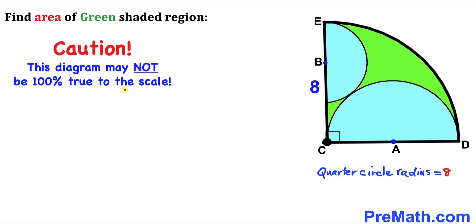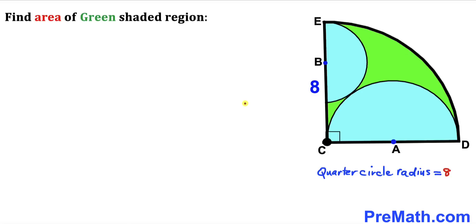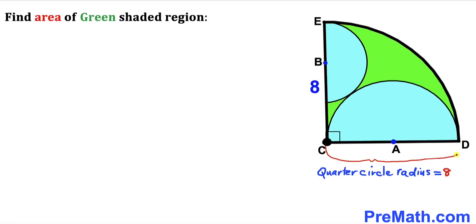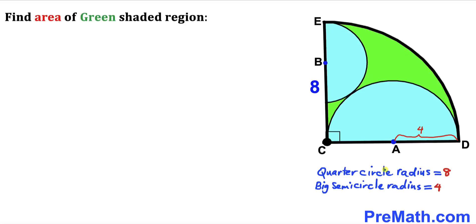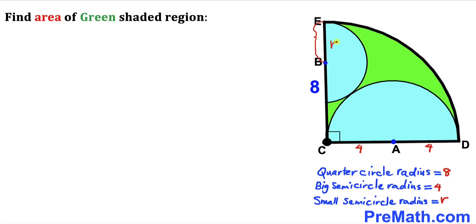Note that this figure may not be 100% true to scale. We know the radius for the quarter circle is eight, which means the length EC is eight units and radius CD is eight units as well. The larger semicircle's radius is half of eight, so it is four units. We'll assume the radius for the smaller semicircle is lowercase r.